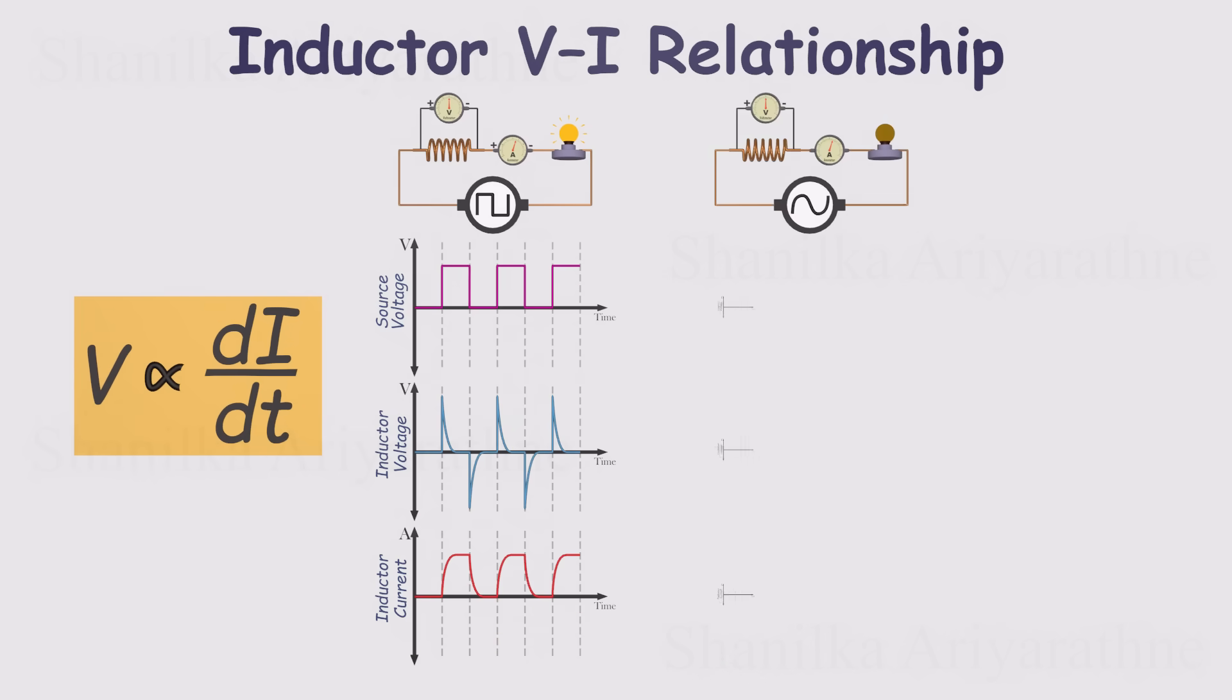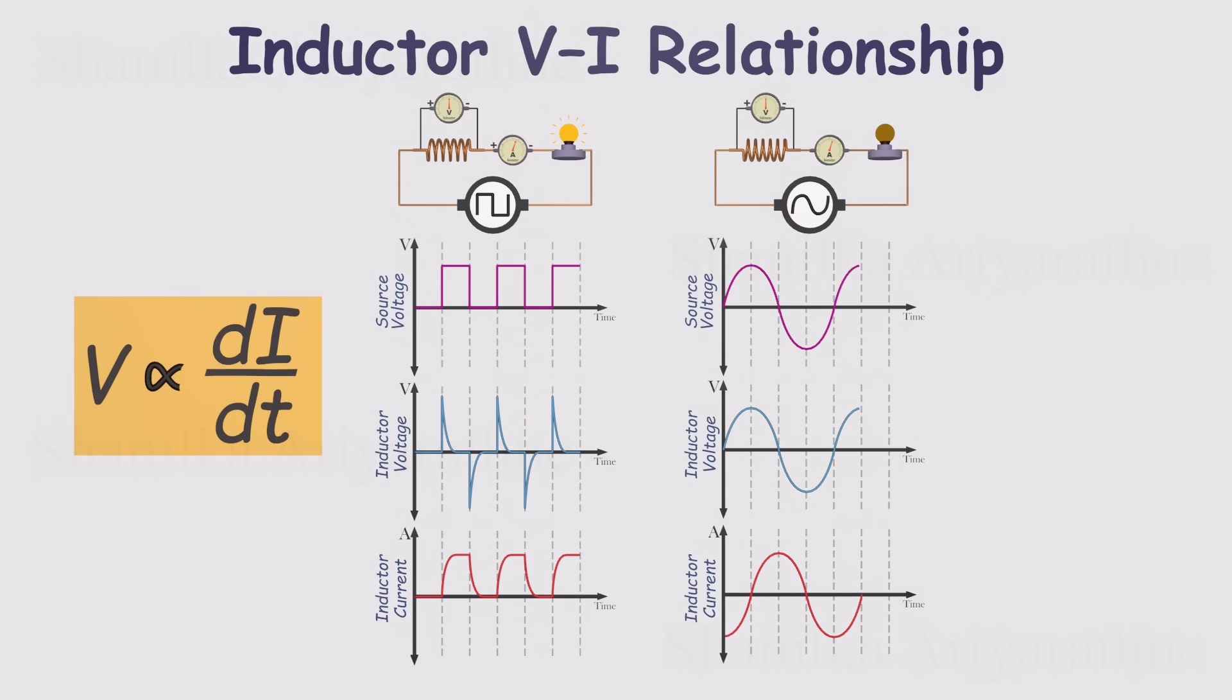We can repeat this experiment using different input signals to see if the same relationship holds. For example, let's use a sine wave this time. When we plot the results, something interesting appears. The voltage across the inductor follows a sine wave, while the current follows a cosine wave. In other words, the current lags behind the voltage by 90 degrees. If we take the first derivative of the current, we get a sine wave, which perfectly matches the voltage waveform. That confirms our relationship once again. The voltage across an inductor is directly proportional to the rate of change of current. No matter what waveform we use, square, sine, or anything else, the same rule always applies. This is the fundamental relationship between voltage and current in an inductor.